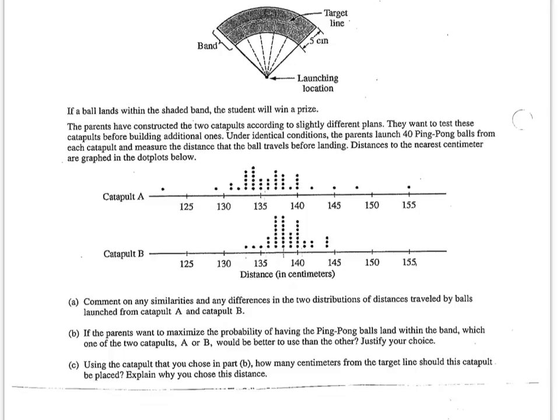And it looks like it's centered right around 138 centimeters. So I'm thinking wherever the target is, if I put this catapult straight on 138 centimeters away, and the results from catapult B, they're pretty consistent, I'm probably going to hit this target band.